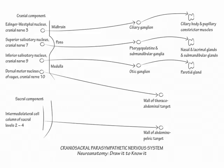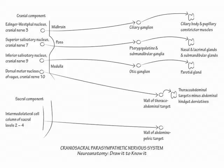Now indicate the thoracoabdominal target organs for cranial nerve 10, the vagus nerve. These target organs constitute the whole of the thoracoabdominal viscera minus the abdominal hindgut derivatives. Cranial nerve 10 produces heart rate depression, bronchial constriction, increased blood flow to the gut, and increased gut peristalsis and secretion.